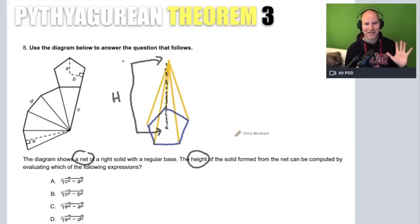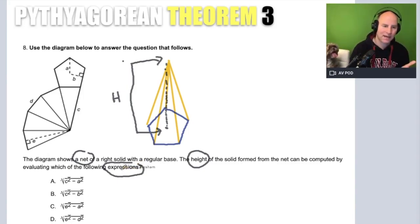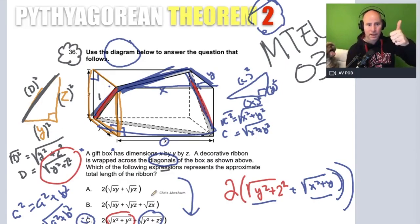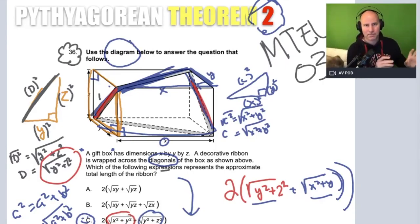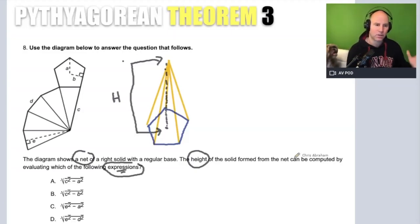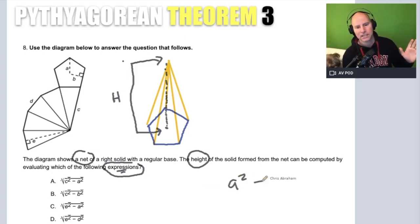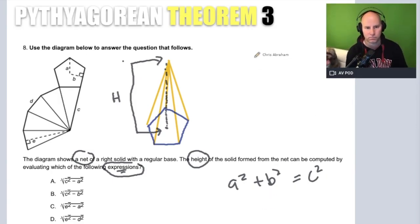We're trying to find the height, and the problem is looking for an expression that can represent it. I'll underline the word 'expression' — the answer is in expression form. In the last problem we were also looking for an expression, and the answer involved the Pythagorean theorem in expression form. Here we're seeing a variation of a² + b² = c².